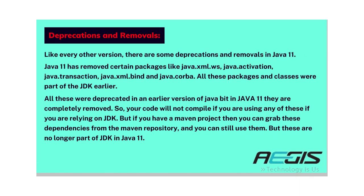Next are deprecations and removals. Like every other version, there are some deprecations and removals in Java 11. Java 11 has removed certain packages like java.xml.ws, java.activation, java.transaction, java.xml.bind, and java.corba. All these packages were part of the JDK earlier but were deprecated in a previous version and are completely removed in Java 11. Your code will not compile if you are relying on these from the JDK. However, if you have a Maven project, you can grab these dependencies from the Maven repository and still use them.